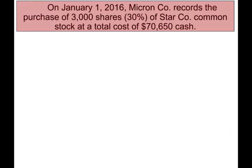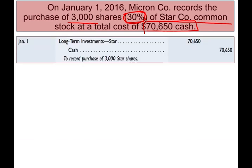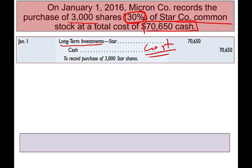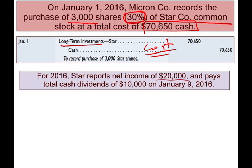Let's take a look at an example. January 1st, Micron records a purchase of 3,000 shares representing 30% of Star's common stock at a total of $70,650. Notice they told you 30% — that means you're going to be using the equity method. On the CPA exam or in homework, they may not tell you explicitly, but since it's 30%, you know to use the equity method. We debit the long-term investment in Star and credit cash, recorded at cost. Then we wait until Star reports their earnings — Star reported $20,000 in net income, and paid out half in cash dividends, which is $10,000.